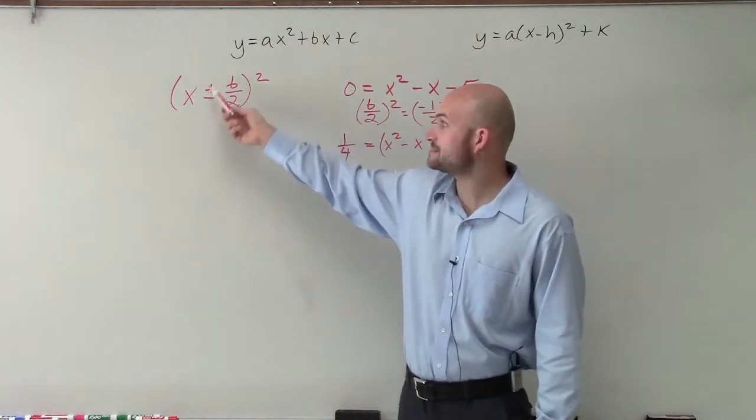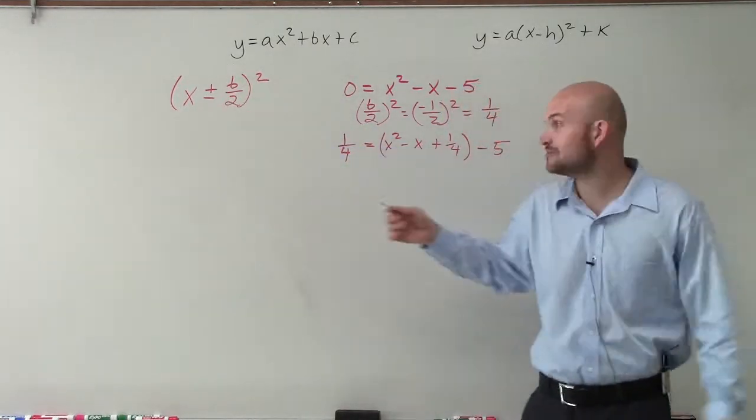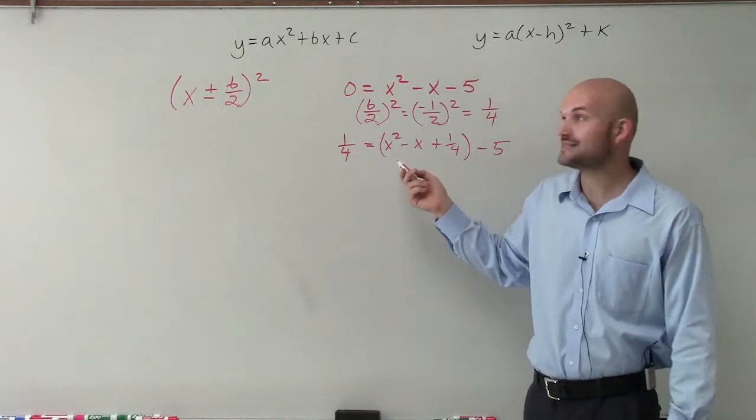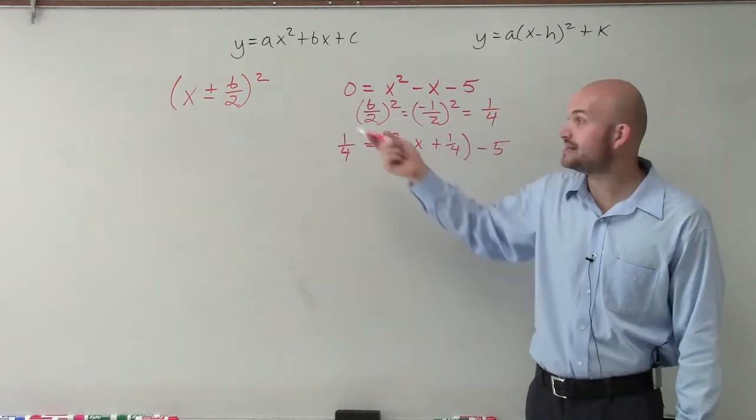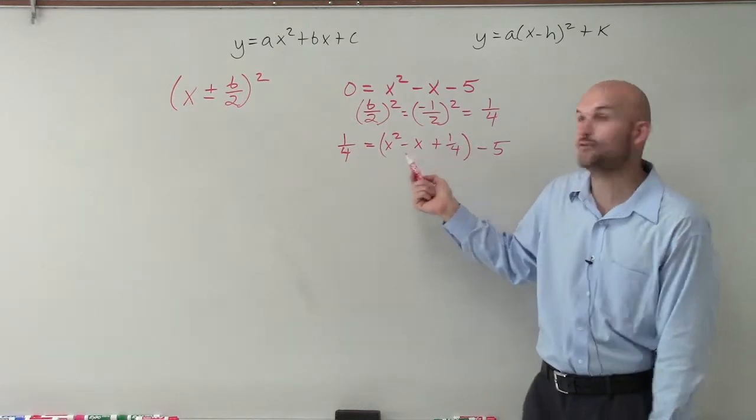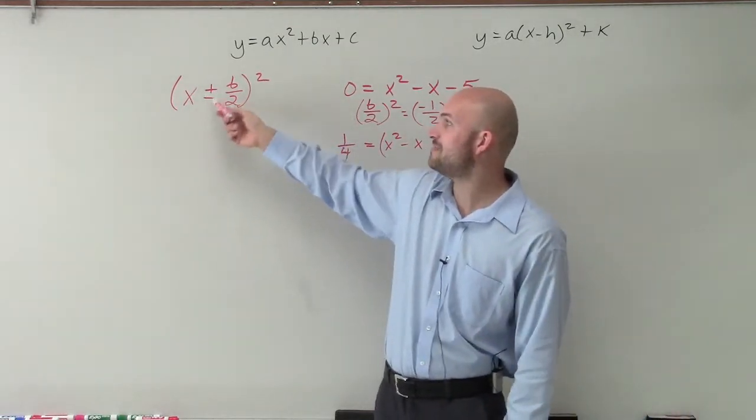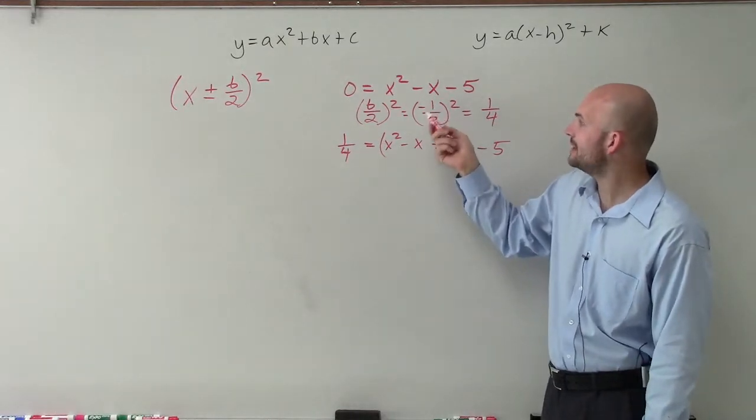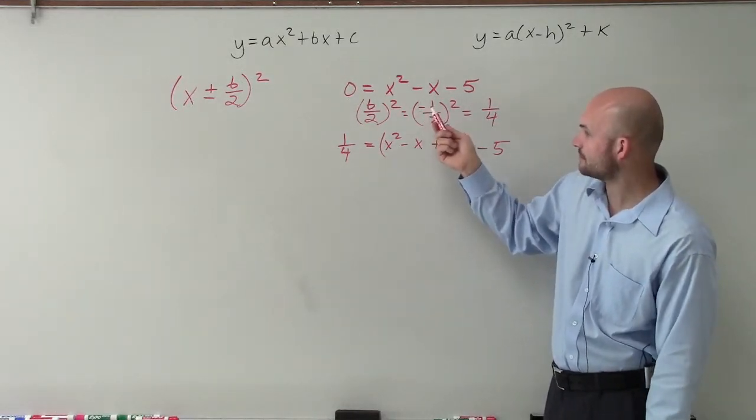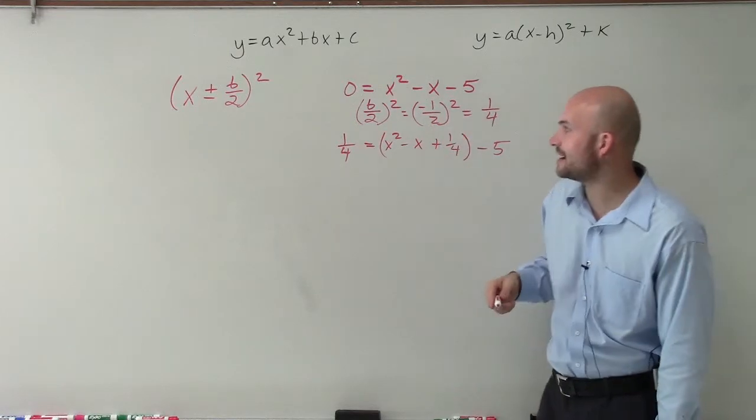So the factored form is x plus or minus b over 2. Now, why is it plus or minus? Well, if my middle term is positive, I'm going to use the positive factor. If it's negative, I'm going to use the negative factor, which in this case, we have a negative 1. So therefore, this is going to be x minus b divided by 2. Well, b divided by 2 is going to be the negative 1 divided by 2.